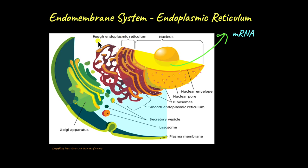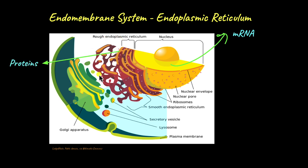Under the microscope, some parts of the endoplasmic reticulum have a very rough appearance because of the presence of ribosomes. The part of the endoplasmic reticulum that has ribosomes is called the rough endoplasmic reticulum, or RER, and ribosomes are the site of protein synthesis. The mRNA that has left the nucleus comes to the ribosomes where proteins are synthesized. The part that lacks ribosomes is known as the smooth endoplasmic reticulum, or SER — because ribosomes are absent, the SER is not involved in protein synthesis but instead is involved in lipid synthesis.